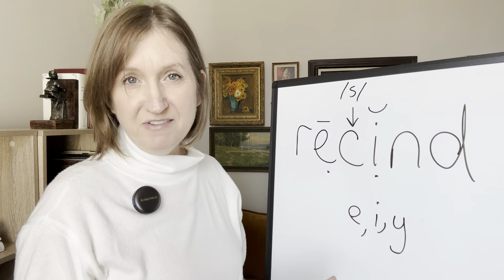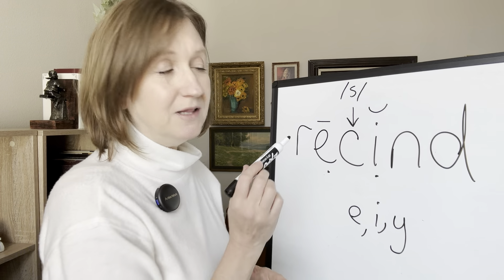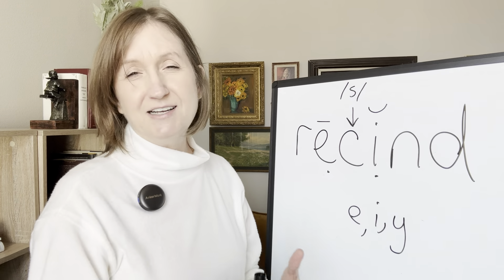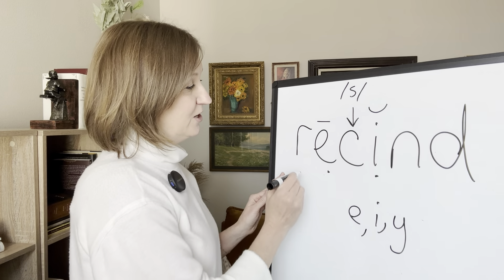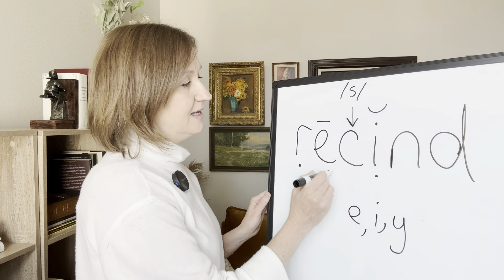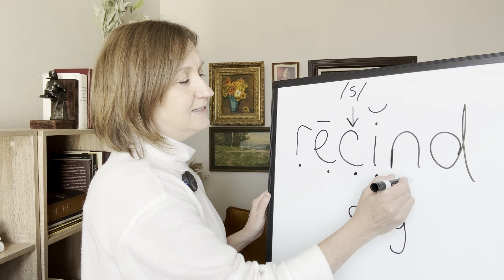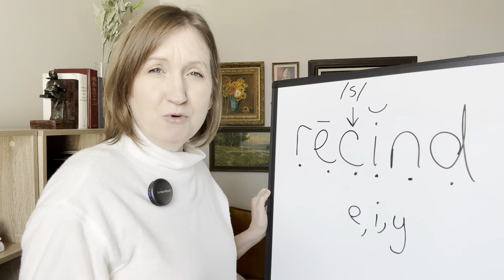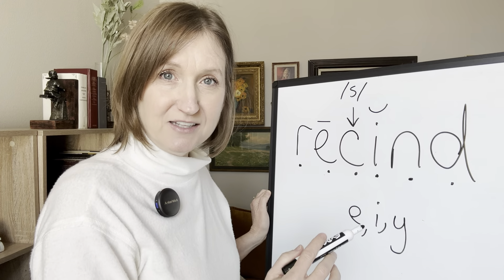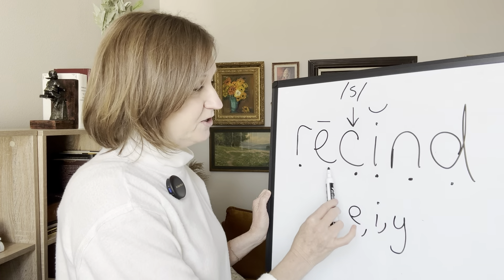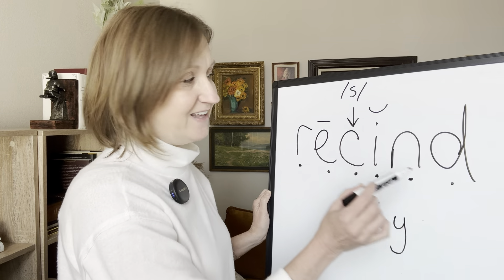Now that we know all of the sounds in this word, we're going to dot each sound. We'll place a dot underneath each sound, which gets it all organized and in order in our mind. That looks like this: r, e, s, i, n, d. Now we're ready to connect the sounds while we connect the dots. The line represents the sound, so there's no stopping with our pen or our voice.